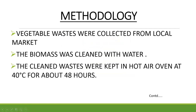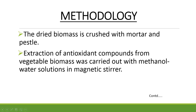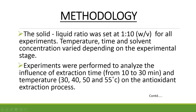Vegetable waste was collected from the local market. The biomass was cleaned with water, and the cleaned waste was kept in a water oven at 40 degrees Celsius for about 40 hours. The dried biomass was crushed with a mortar and pestle. The extraction of antioxidant compounds from the vegetable biomass was carried out with a methanol-water solution in a magnetic stirrer. The solid-to-liquid ratio of methanol was fixed at 1:10 for all experiments.